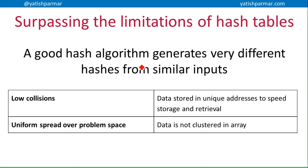Now basically, if you want to surpass the limitation of a hash table, remember that a good hash algorithm is going to generate very different hashes from similar inputs. There are different techniques for hashing. Using modulus is obviously the simplest version that we can do. However, if you remember that we want to have low collisions by making sure that we have data stored in unique addresses, then by doing that we have a uniform spread across the problem space.